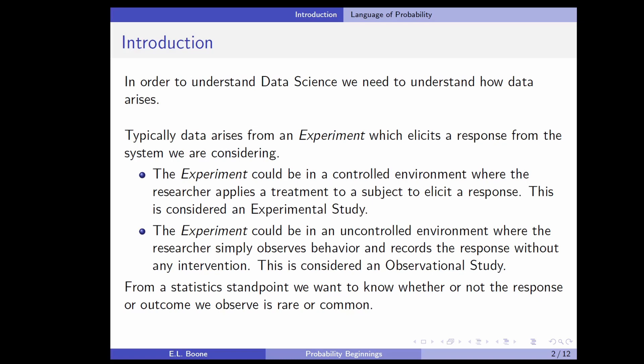We have an experiment — something that elicits a response from the system we're considering. 'Experiment' is a really broadly defined term here. It could be a controlled study where the researcher intervenes, applies some treatment to a subject or system, and observes the response or outcome from that intervention. This is considered an experimental study, and that's usually what people think of when they think of an experiment.